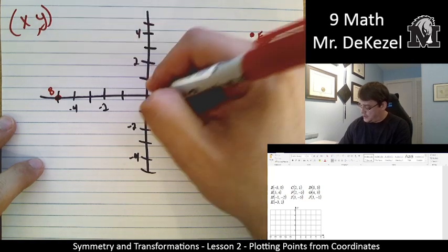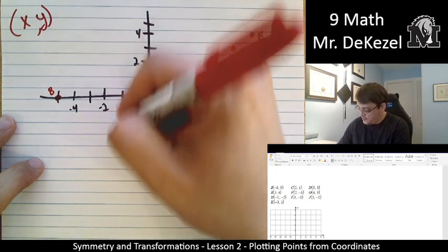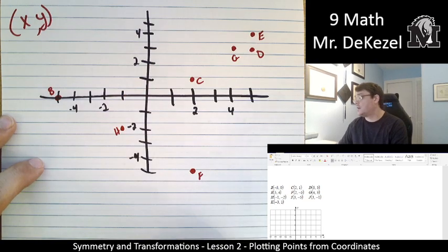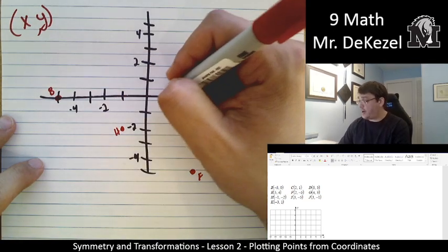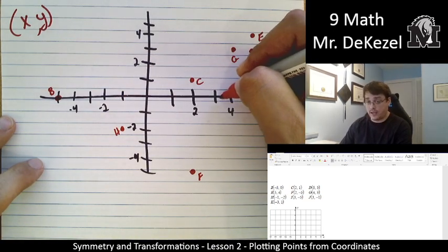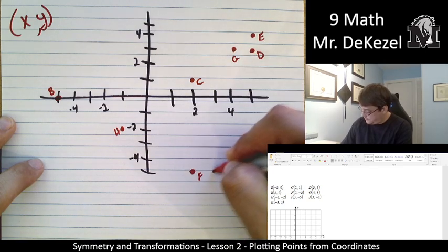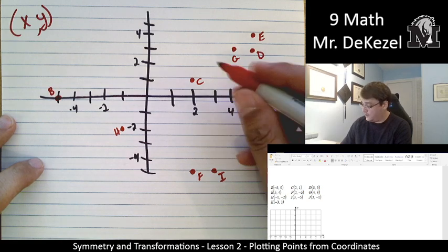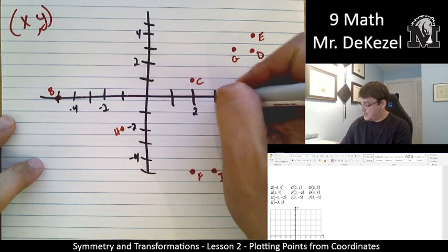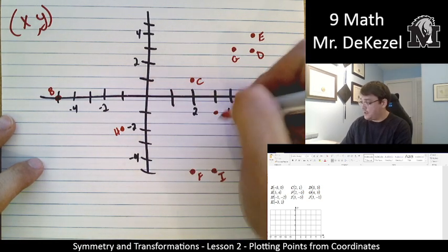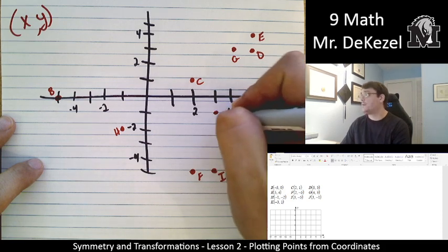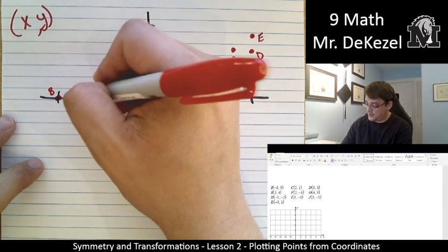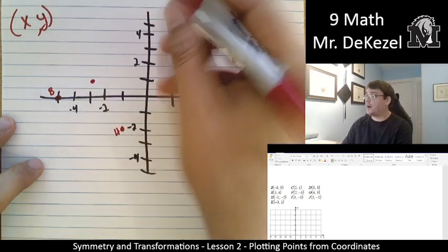H is minus 1, minus 2. So 1 to the left and then 2 down. That is H, I said. Plus 3 and minus 5 for I. So 1, 2, 3 to the right and then down 5. These are all unique points unless they are exactly the same coordinates. 3 to the right and 1 down for J, plus 3 and minus 1. And then for K, minus 3 and plus 1. So 1, 2, 3 to the left and then up 1.